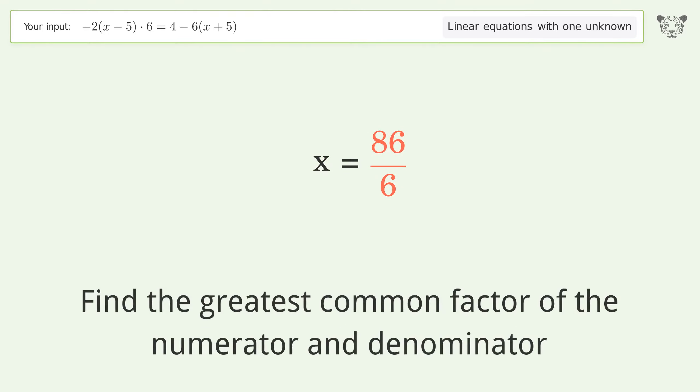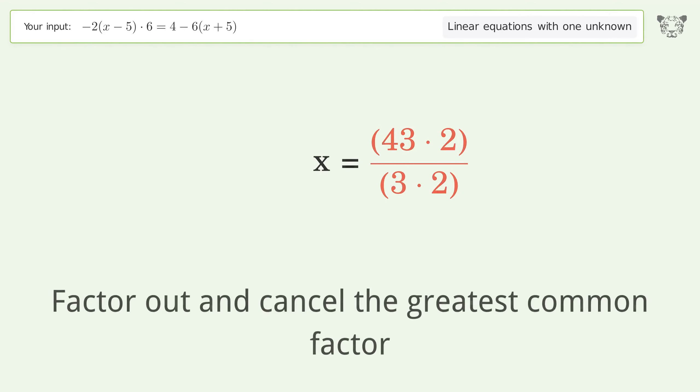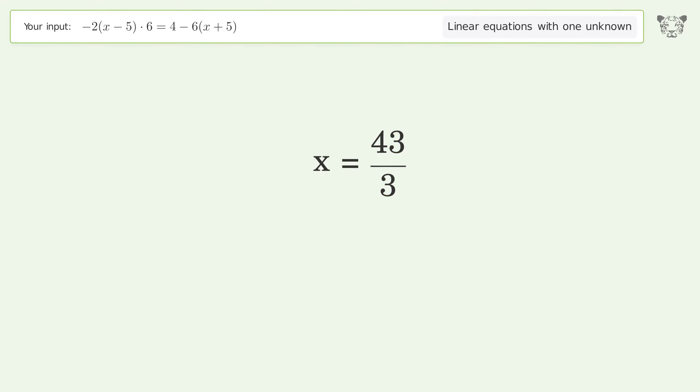Find the greatest common factor of the numerator and denominator. Factor out and cancel the greatest common factor. And so the final result is x equals 43 over 3.